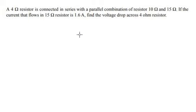Hello everybody, so today I will talk about physics. The topic today is about series and parallel. Now I will show you the answer: A 4 ohm resistor is connected in series with a parallel combination of 10 ohm and 15 ohm resistors. If the current that flows in the 15 ohm resistor is 1.6 A, find the voltage drop across the 4 ohm resistor.